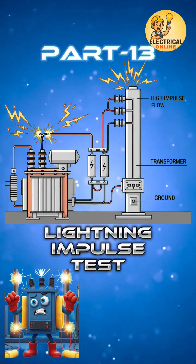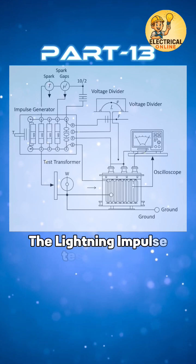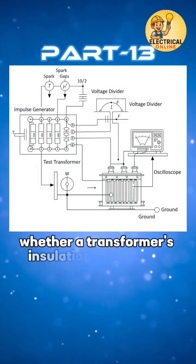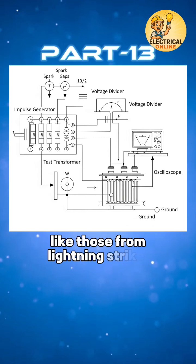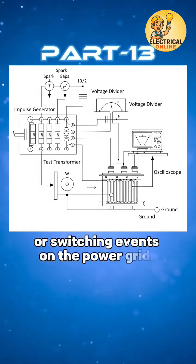In transformer test series, the 13th one is lightning impulse test. The lightning impulse test checks whether a transformer's insulation can survive extreme voltage surges, like those from lightning strikes or switching events on the power grid.